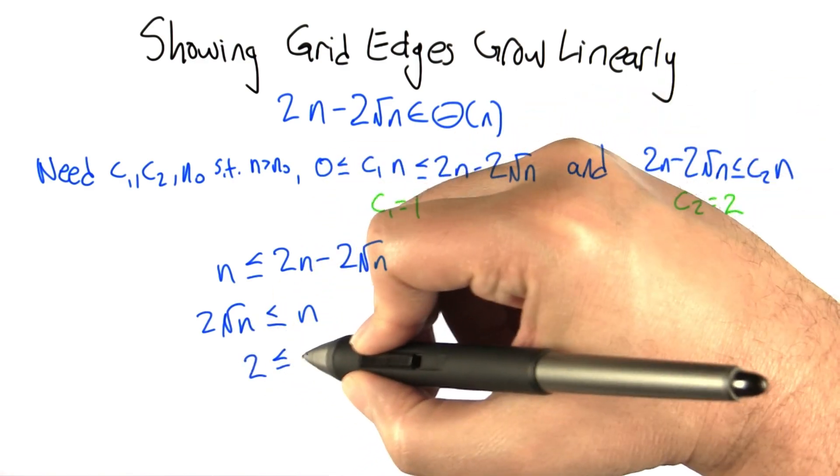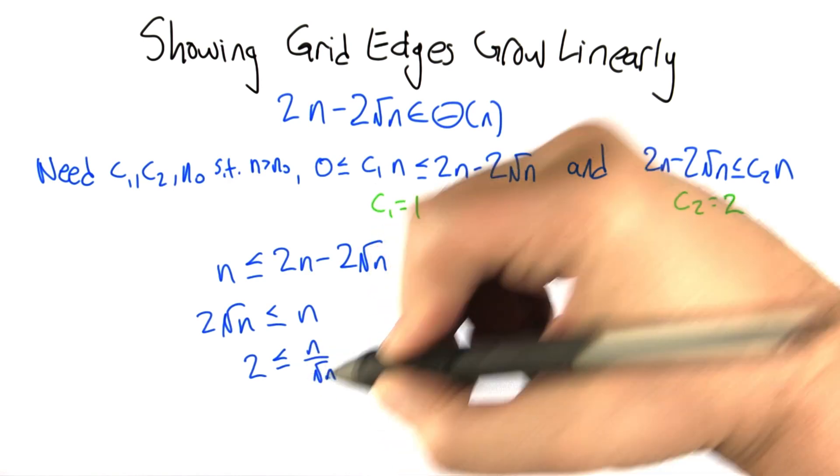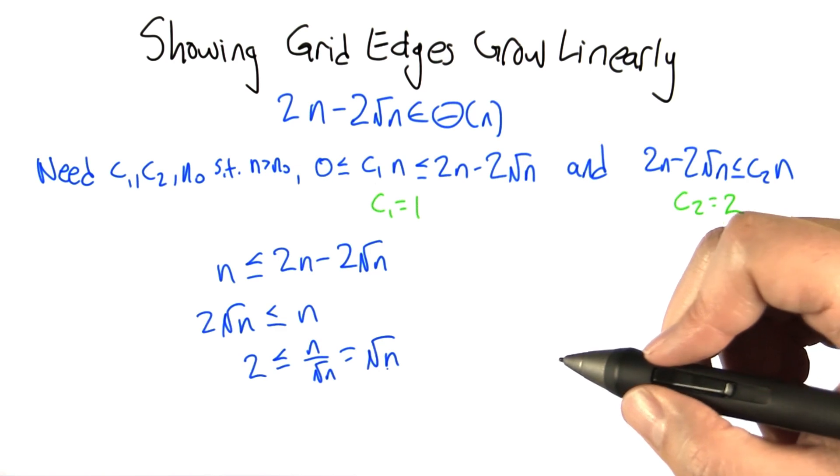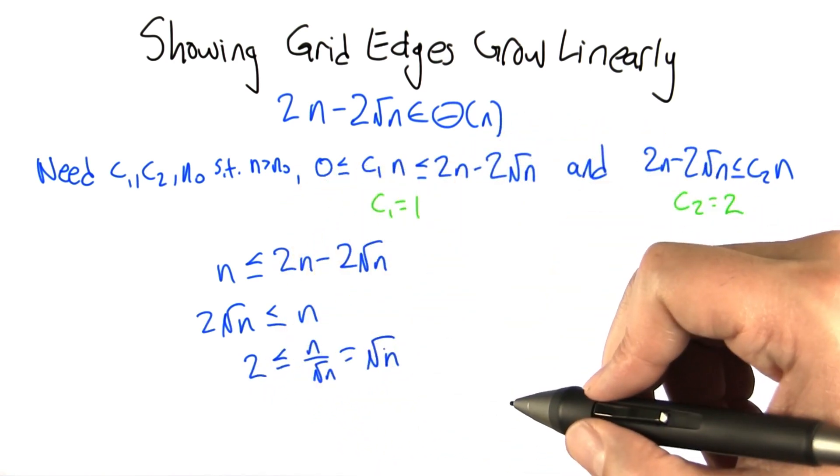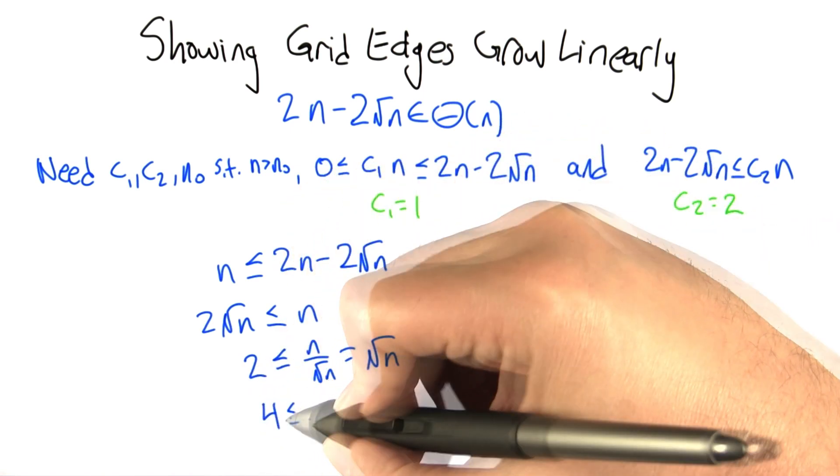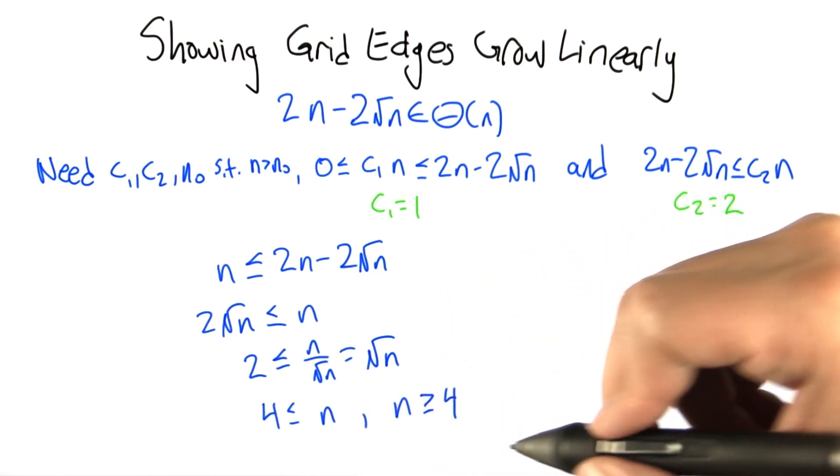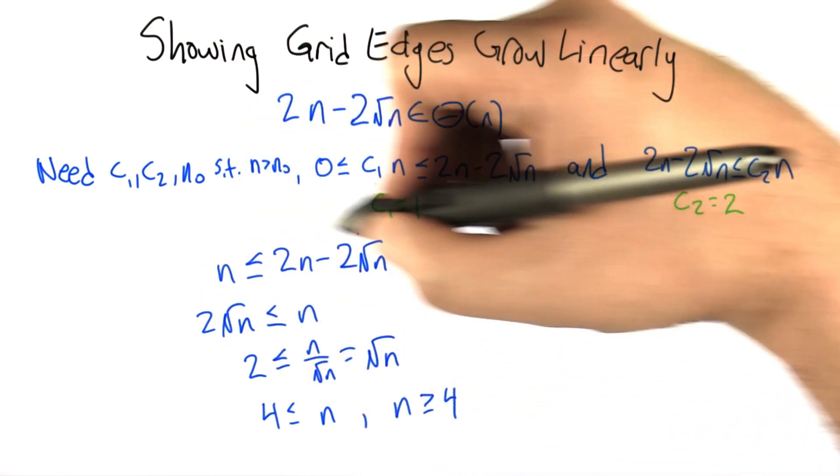we get 2 less than or equal to n divided by √n. n divided by √n is actually √n. So we have 2 less than or equal to √n. We square both sides, we have 4 less than or equal to n. Or, flipping that around the other way, if n is bigger than or equal to 4, then this is true.